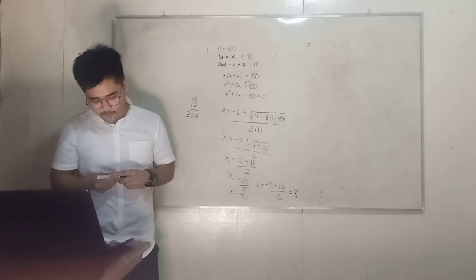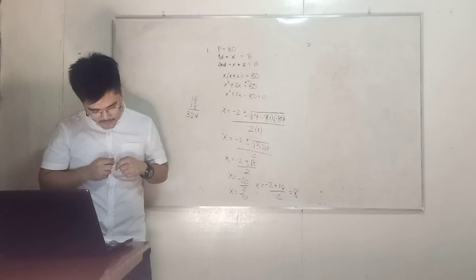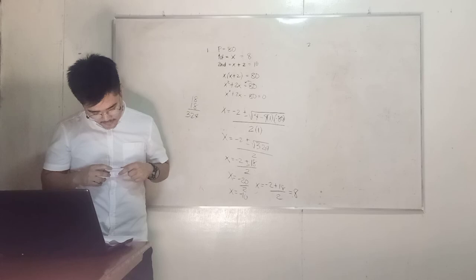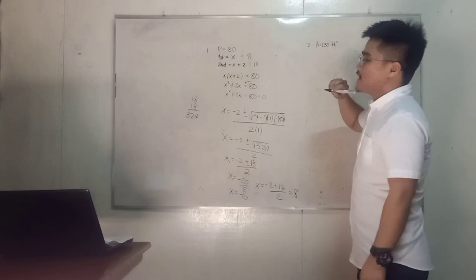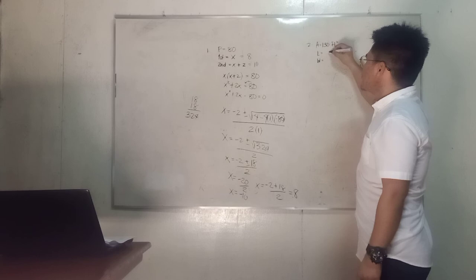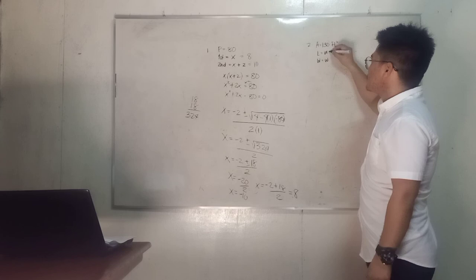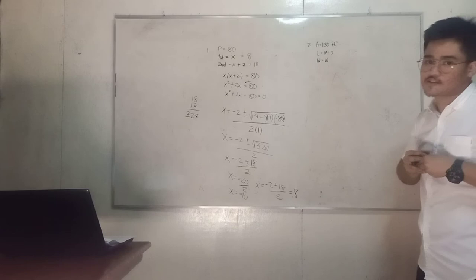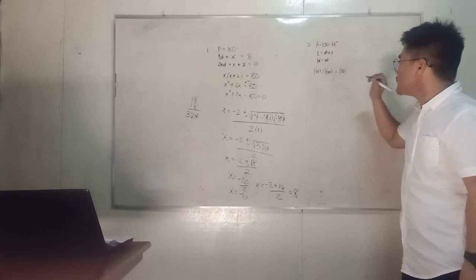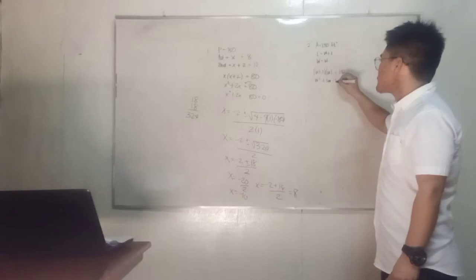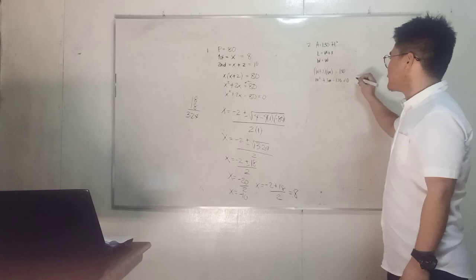Let's go to number two. A student is painting an accent wall in his room where the length of the room is three feet more than its width. The wall has an area of 130 square feet. So we have our width, and the length is three meters more than the width. So we have w plus 3 times w is equals to 130. So we have w squared plus 3w minus 130 is equal to zero.